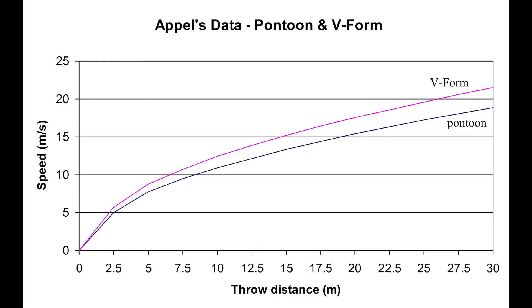Another way to calculate vehicle speed from throw distance is the empirical method, which is essentially data derived from experiments. The thing is, no matter which way we go about it, we kind of end up in the same sort of speed range, and I'll show you what I mean.